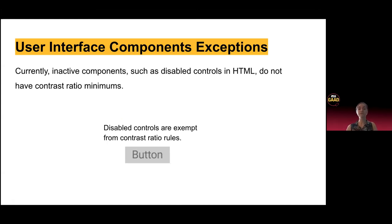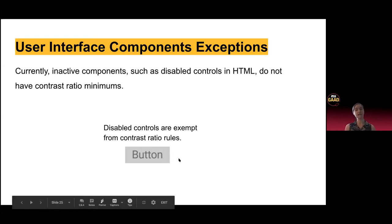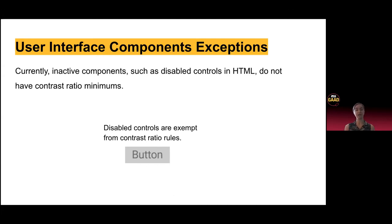Disabled UI components are exempt — this includes things like disabled buttons. If you go through and read the WCAG guidelines, it almost sounds as if they're exempt, but be very cautious when you use them. Right now there's not a great way to accommodate this for people with low vision. I would say use this with caution and really try to challenge yourself — do we need a disabled UI component, or is there something else that would solve that problem? Because someone with low vision might have a really hard time seeing a disabled button and not get the cues they need.